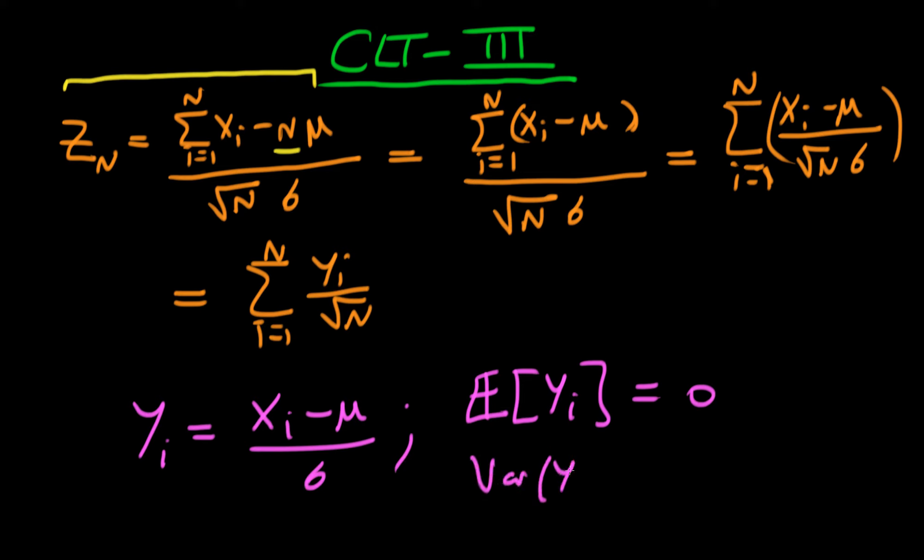And then the variance of yi is just defined as being equal to, well, the variance of the top is just going to be the variance of xi because mu is just a constant, it doesn't have any variance. But I've got to multiply that by 1 over sigma squared because of the fact that the variance of a random variable times a constant is equal to that constant squared times the variance of the random variable. And we know that the variance of an individual xi is just sigma squared, so the top is actually sigma squared which cancels with the bottom, so I've actually got a random variable yi which has a mean of 0 and a variance of 1.